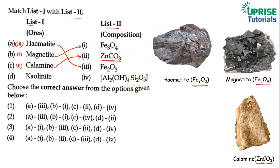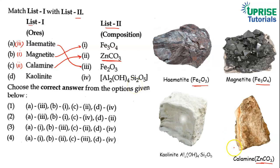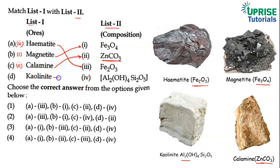Ab last hai kaolinite. Kaolinite ka formula hota hai Al2(OH)4 Si2O5. Aur yah aluminum ka ek important ore maana jata hai. Means D wala jo hoga, vah fourth se match karega.